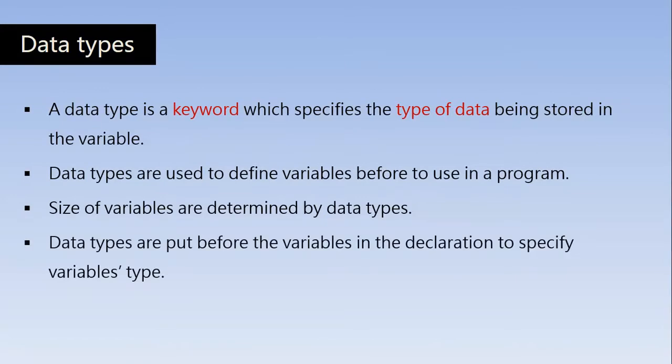Data types are put before variables in the declaration to specify the variable type, as we saw in the last programs. For example: int num, sum. Here this is a declaration statement which declares two variables, num and sum, of the type int. So int is a data type defining the type of data being stored in the num and sum variables. All data types are keywords.